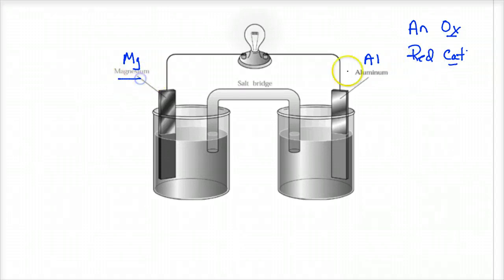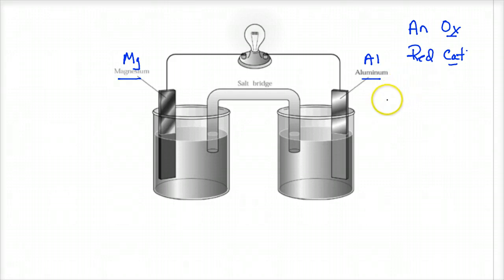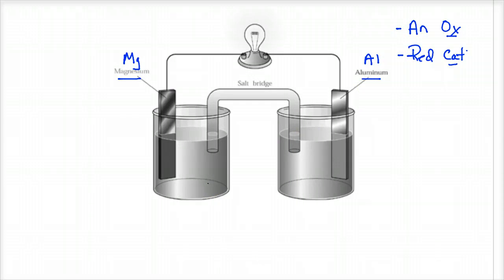Which of the two electrodes — magnesium or aluminum — is better at losing electrons, more reactive, more active, or better at oxidizing? If you don't know this off the top of your head, you're going to have to go to a table. There are reduction potential tables and reactivity tables that different courses use. I'm going to go to a reduction potential table first.